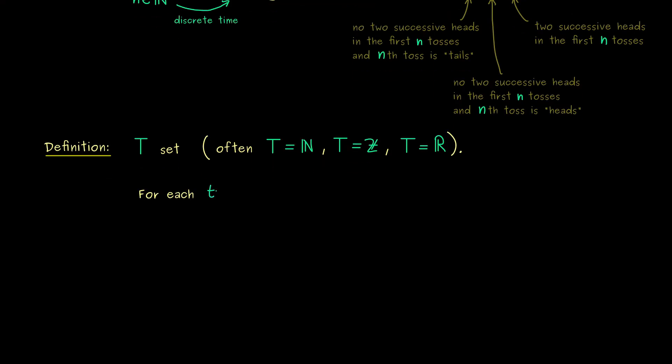So in other words we define a map for each time point in our set T. And now of course all these X_t should be defined on the same sample space Ω. And in general we would say they map into R or R^n, so we have a random variable or even a random vector.